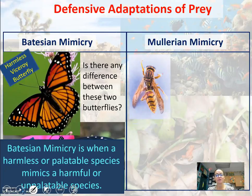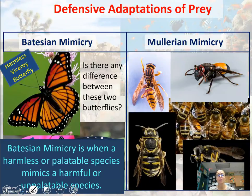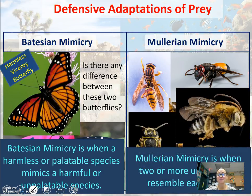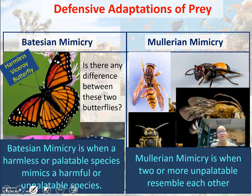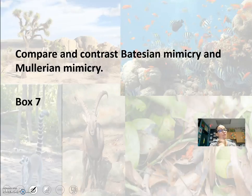In Mullerian mimicry, you have different kinds of wasps or bees — insects that are all black and yellow. By natural selection, they've evolved to all look similar. If a predator gets stung by a black and yellow bee, the next time it sees something black and yellow it'll avoid it — so this is a kind of group defense. Mullerian mimicry is when two or more unpalatable species resemble each other. Compare and contrast the two types of mimicry — that's box seven.